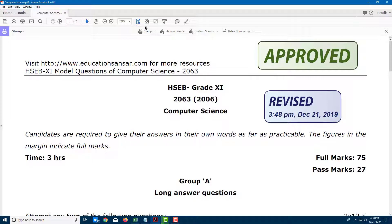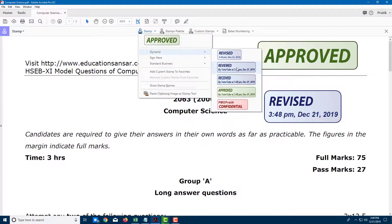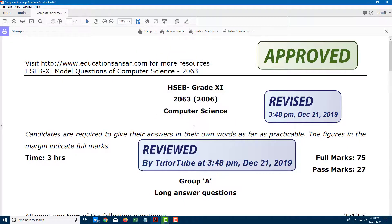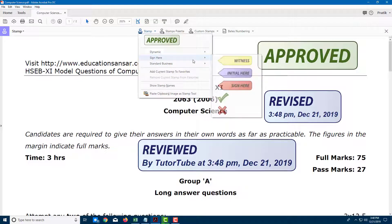You can also go over here and there's a Reviewed stamp—you can see this is reviewed by Tutor Tube. There are different stamps which are generated for you. You can also sign here, add a Witness stamp just like that, and you also have checkmarks.